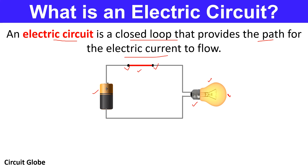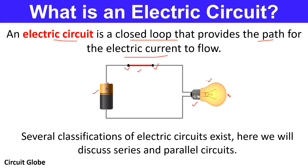The energizing element such as a battery or generator is necessary as it provides the required power for circuit operation. An electric circuit can be classified as AC or DC type depending on the type of excitation provided, or it can be series or parallel based on the arrangement of circuit elements. Here we will discuss series and parallel circuits and their differences.